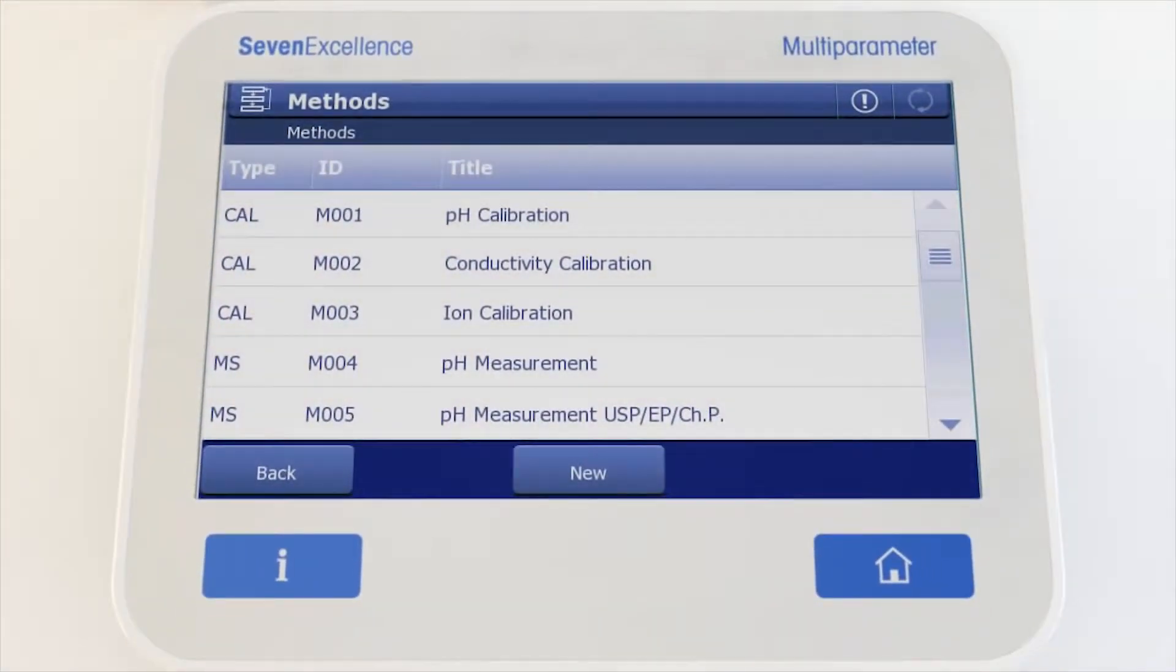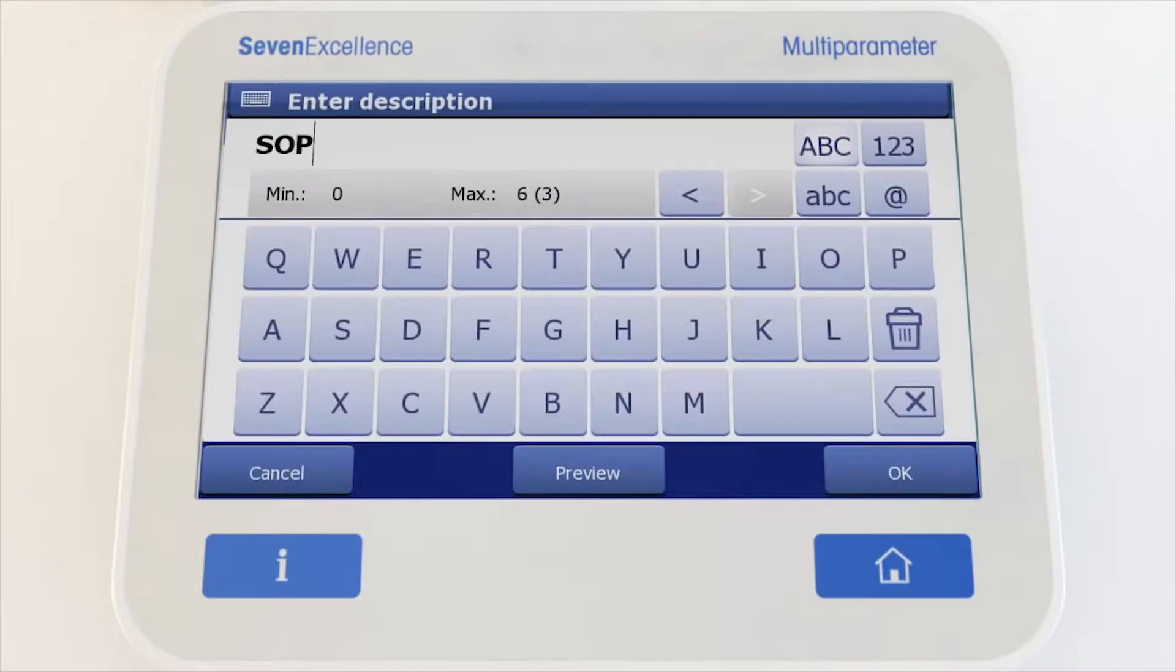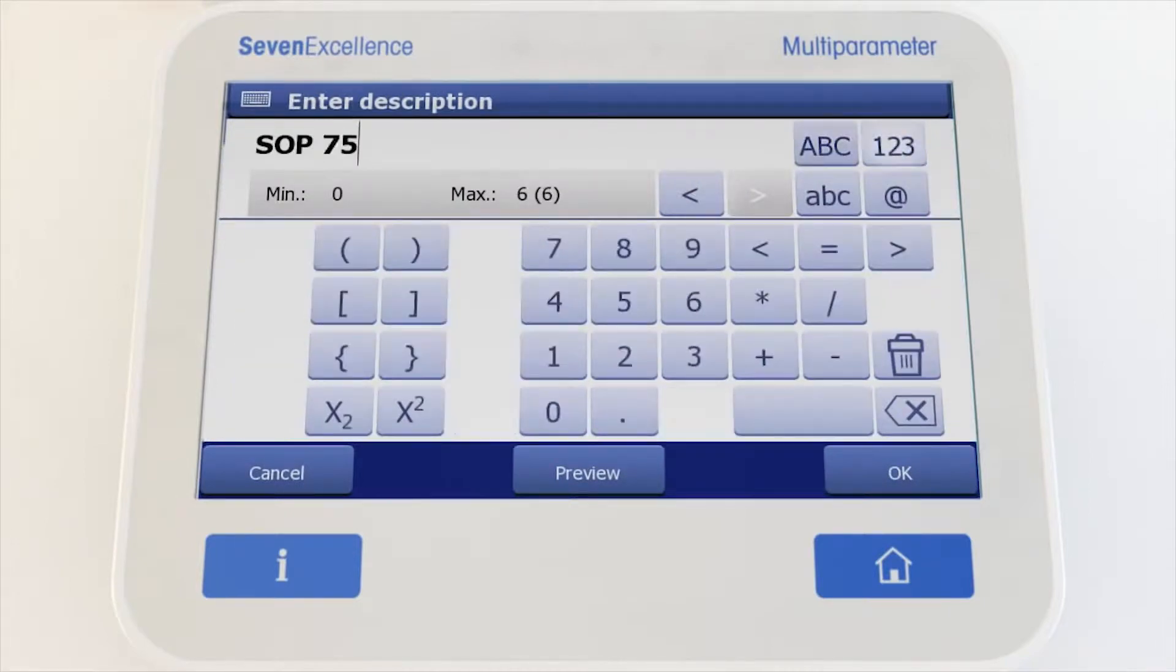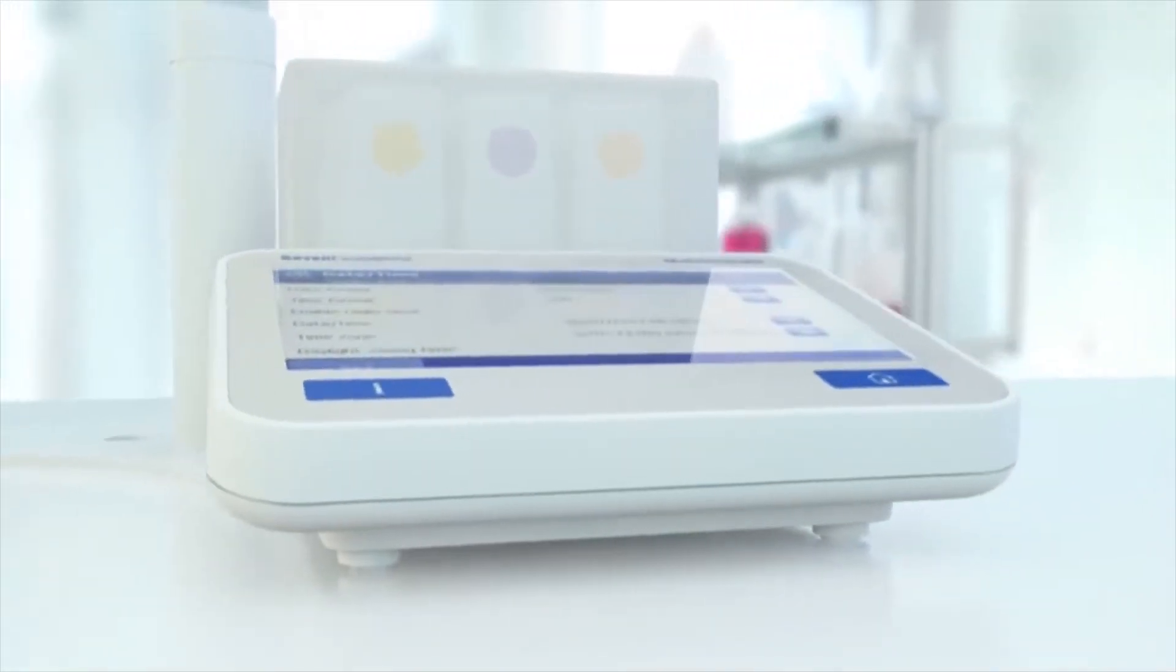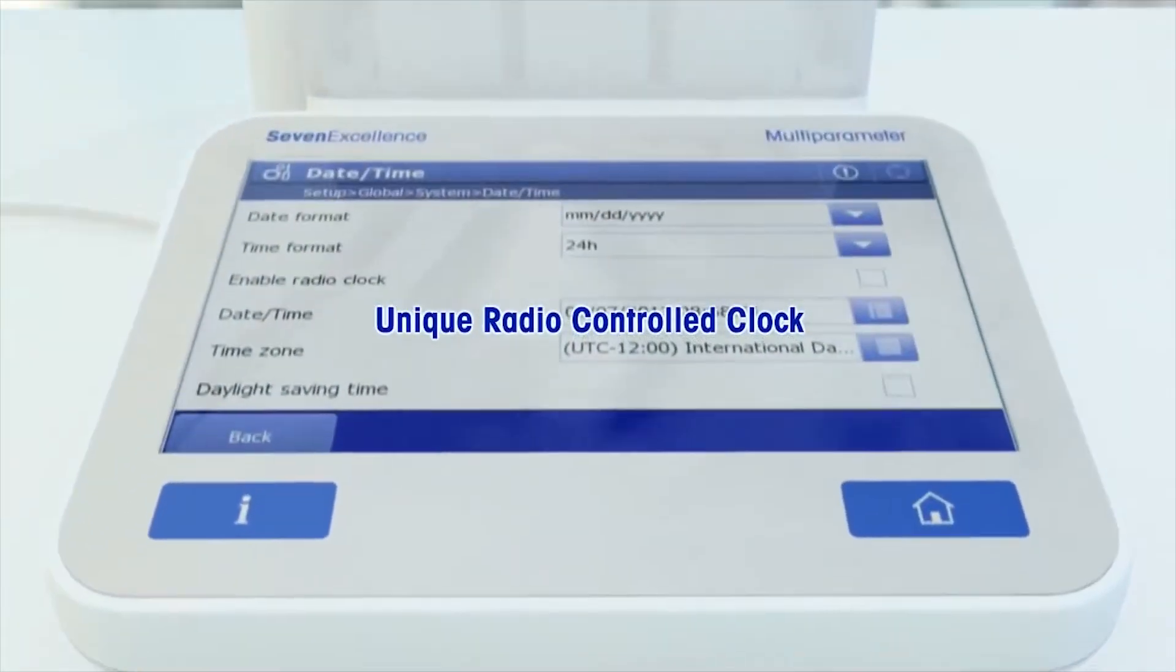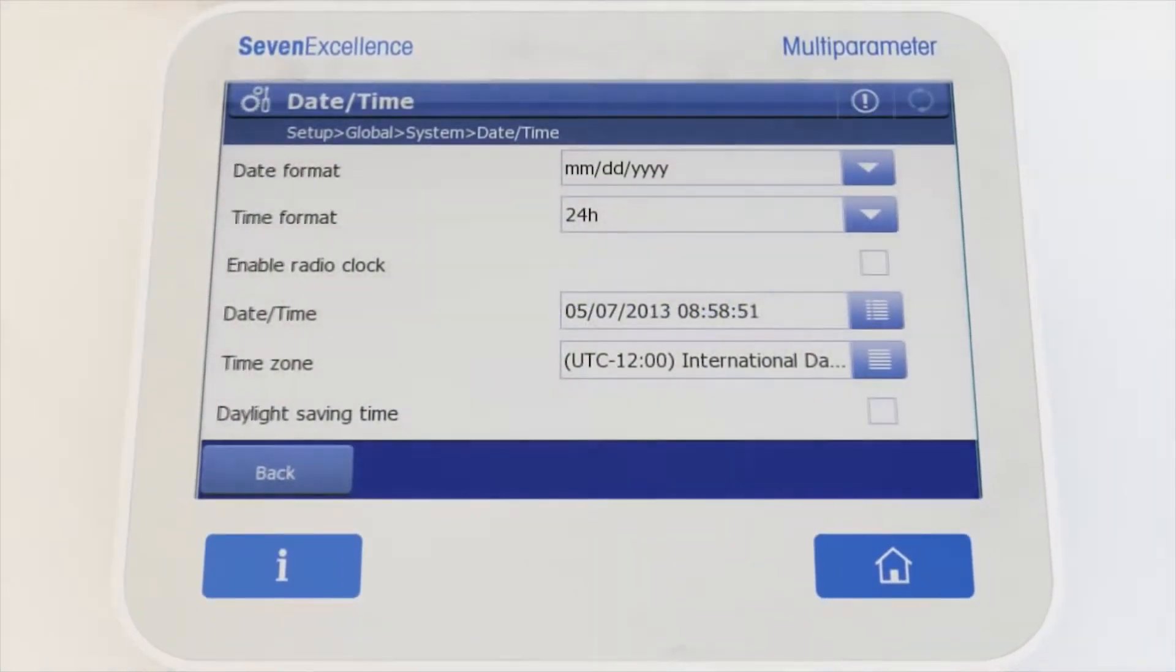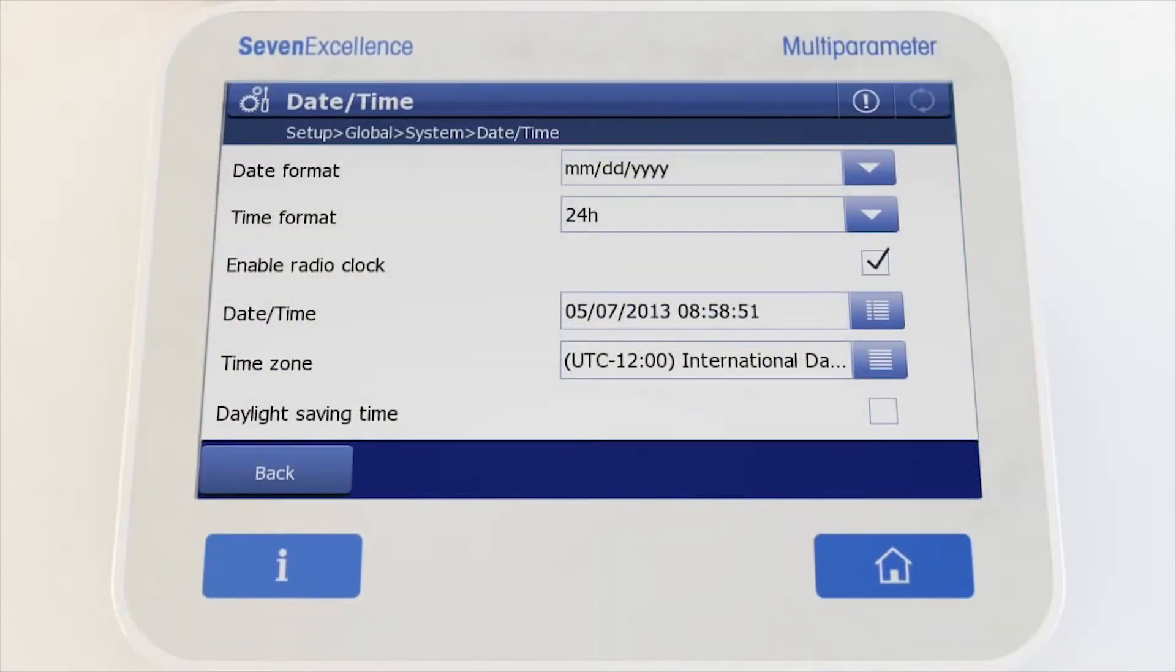Program your SOP as a SevenExcellence method and ensure that each analysis is performed under identical and correct conditions. By a single tap on a customized shortcut, authorized users can start a method quickly and safely. One click.